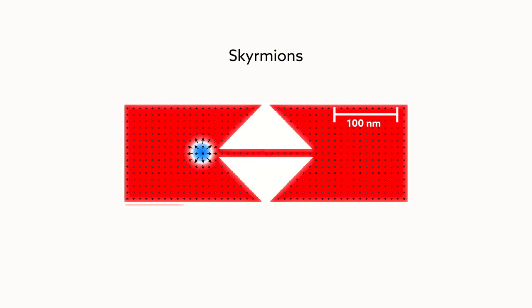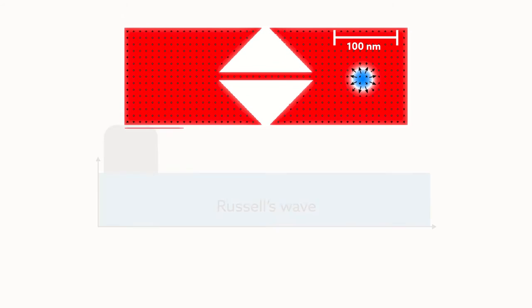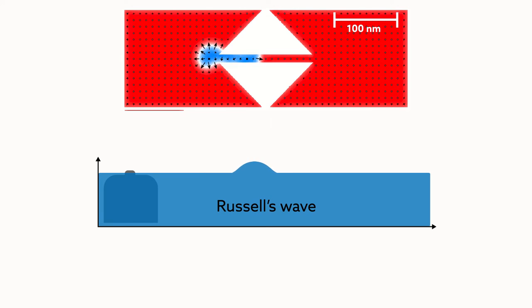Dubbed skyrmions, these magnetic whirlpools possess many properties considered ideal for carrying digital information. Like Russell's wave, skyrmions keep their shape almost indefinitely. In a computer, this stability would make bits extremely difficult to erase.